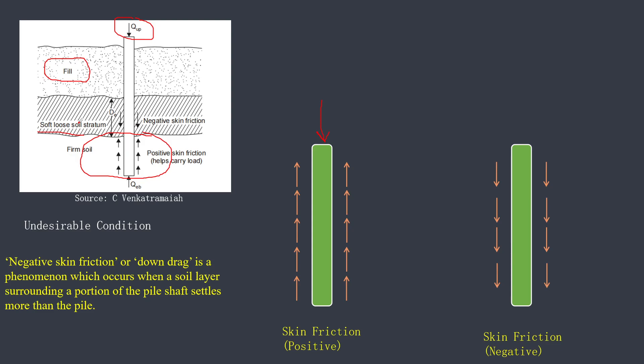Because of this new load from the fill, the soft or loose soil will start compacting — there is deformation in this soft soil. Because of this deformation or sinking of the soil, negative friction is generated. While the soft soil is getting compressed, it applies additional friction onto the pile, which tries to settle and sink the pile further, causing additional settlement. This friction acting vertically downward is called negative skin friction, and it is an undesirable condition.